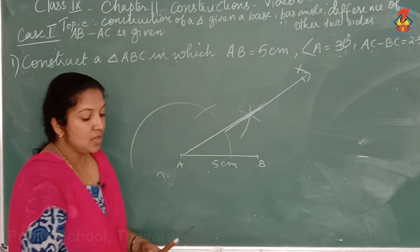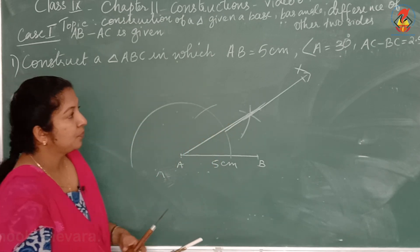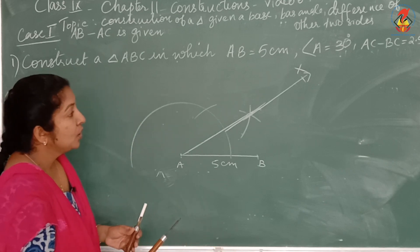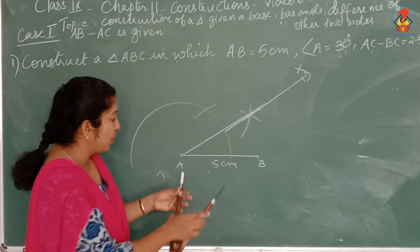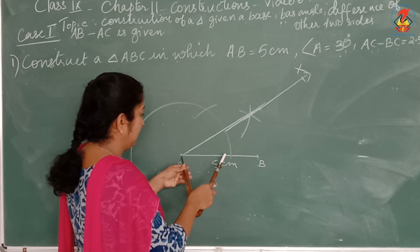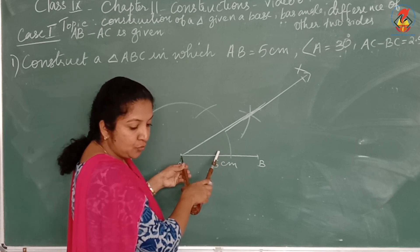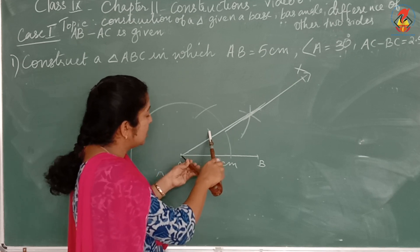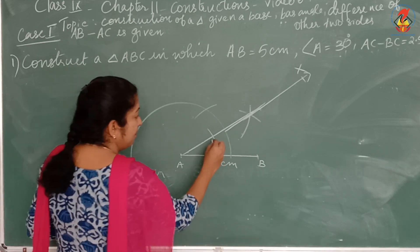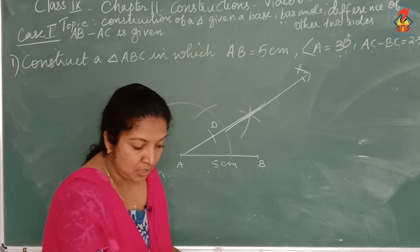Since AC minus BC is given as 2.5 cm, take 2.5 cm — just half of the 60-degree arc measurement — make a cut on ray AX and mark that point as D. Then join B and D.